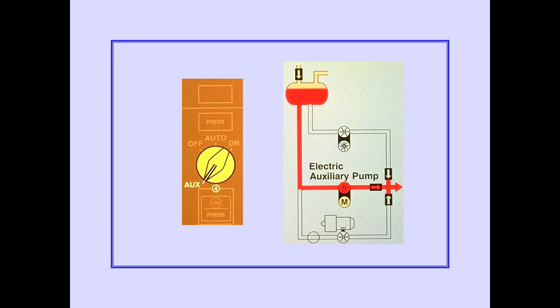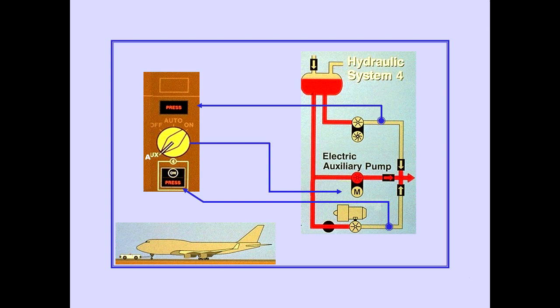The demand pump selector for System 4 has an additional position labeled AUX. The auxiliary pump is used only for ground operations. With the selector in AUX, the electric auxiliary pump operates when the engine pump output pressure is low. The number four demand pump will not operate and the demand pump low pressure light illuminates.